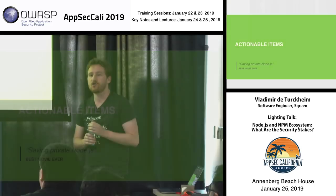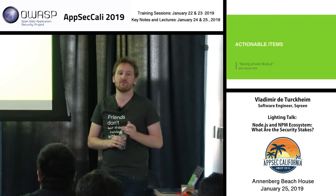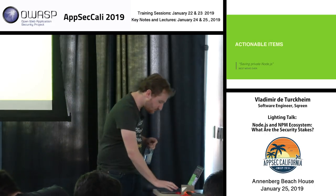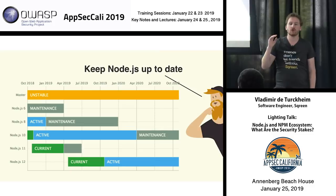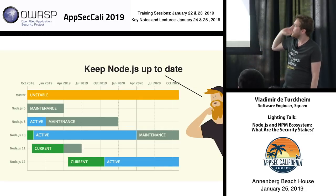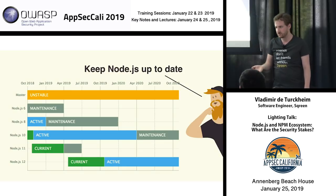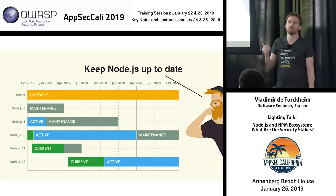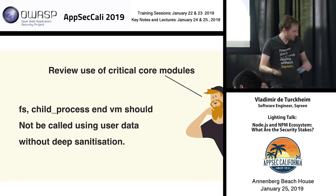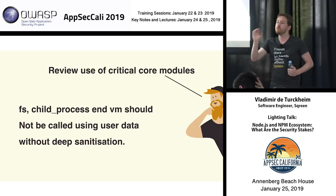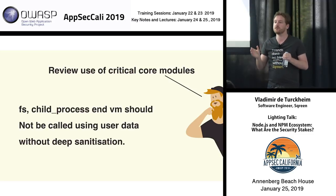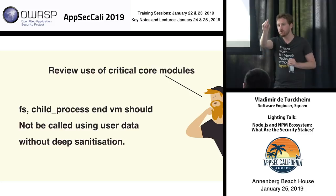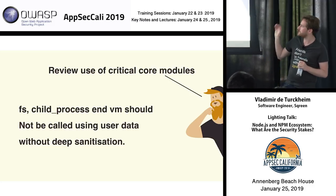Now for the last part: a few actionable items if you have Node.js in production or on your developers' desktops. First — and I'm surprised I have to say this — keep it up to date. We have a predictable release cycle with LTS and maintenance versions. Make sure you are never using something that is not under a maintenance version anywhere — that's a high hazard and we won't issue patches for them. Also, review the use of critical modules like file system and child process in Node core, which should never be called with unsanitized user data.